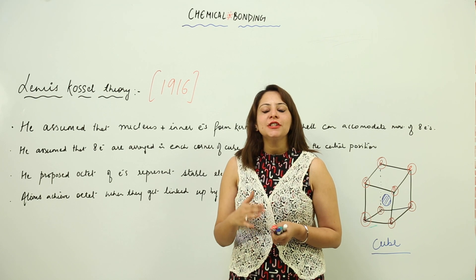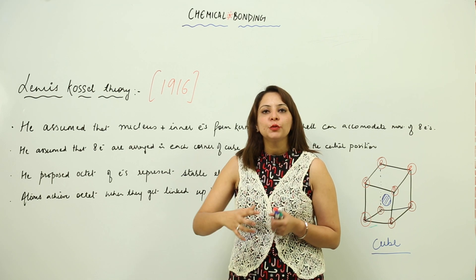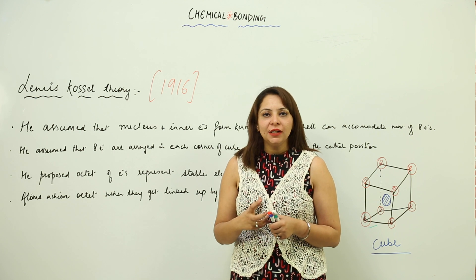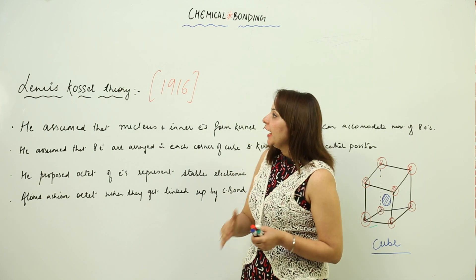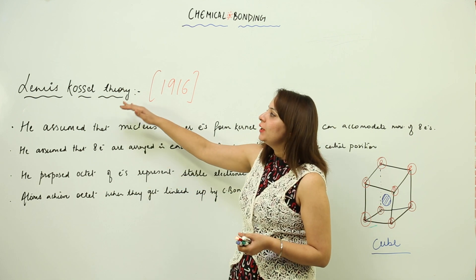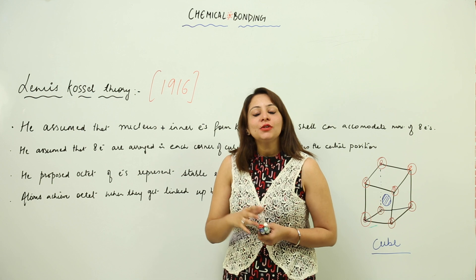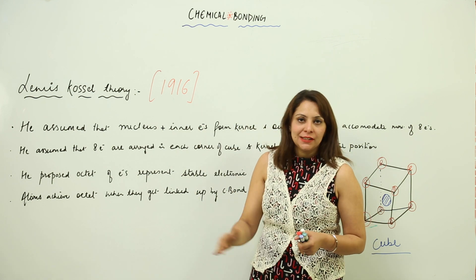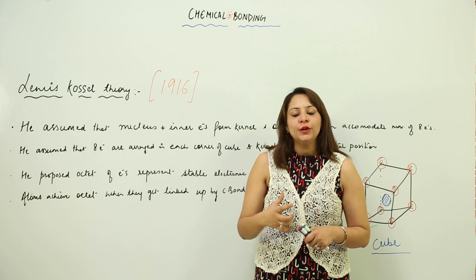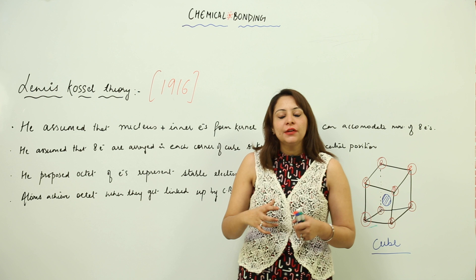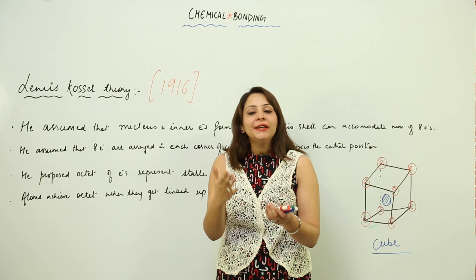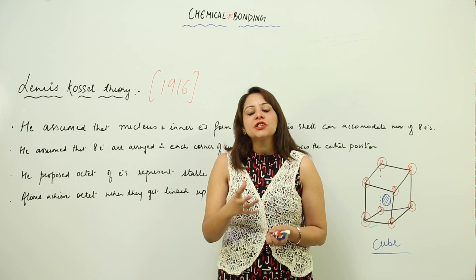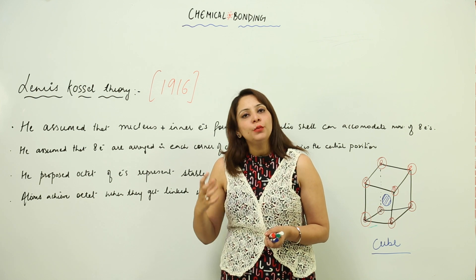We are going to start with the first theory that was put forward to explain the reason behind chemical linkage, and that was the Lewis Causal Theory. Lewis gave this theory in 1916. When this theory was given, the quantum approach was not there — we were just familiar with the Bohr model.